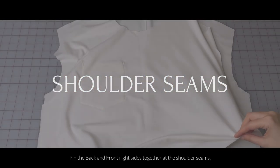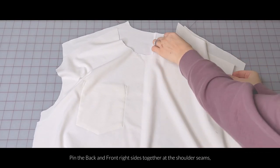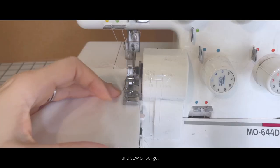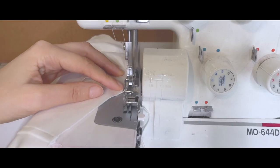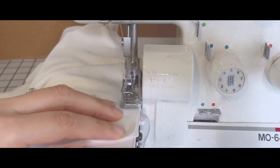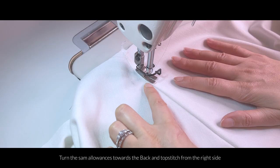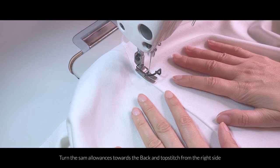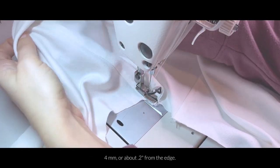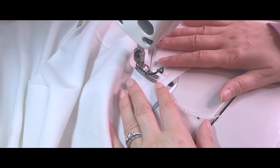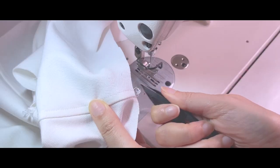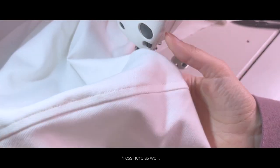Pin the back and front right sides together at the shoulder seams and sew or serge. Turn the seam allowances towards the back and topstitch from the right side 4mm from the edge. Press here as well.